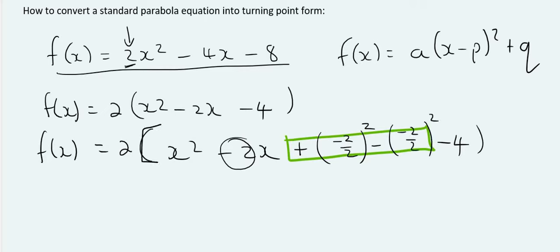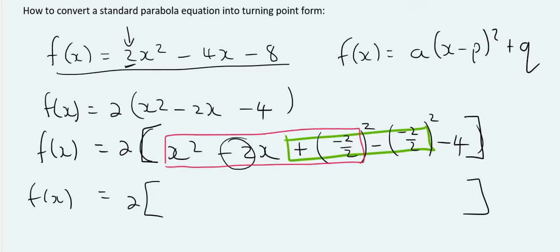I'm actually going to turn this outside bracket into big square brackets, just so we don't forget what's what. Then, we have f of x equals to 2. I'm not going to do anything with that, I've got my big square bracket.